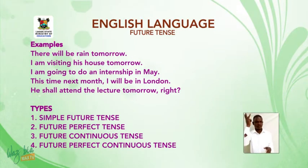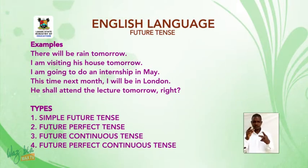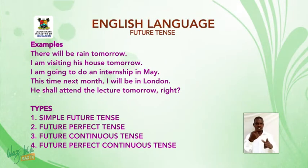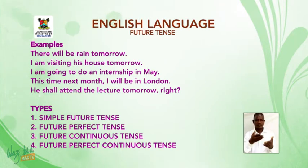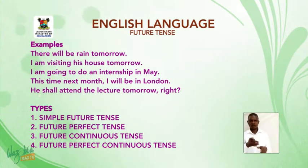Examples of future tense: There will be rain tomorrow. I am visiting his house tomorrow. I am going to do an internship in May. This time next month, I will be in London. You shall attend the lecture tomorrow, right? All these examples are future tense — they will occur in the nearest future.